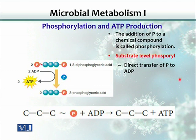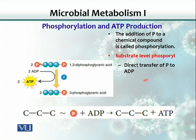There are three different ways by which ATP can be generated. The first is called substrate-level phosphorylation. Phosphorylation refers to the addition of a phosphate group to a chemical compound. In substrate-level phosphorylation, there is a direct transfer of phosphate to an ADP molecule.